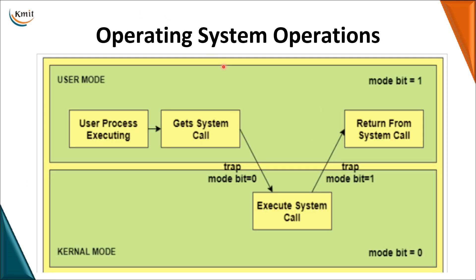We have covered the basic services provided to the user. Now we'll see what are the operating system operations. Basically, an operating system operates in two modes: user mode and kernel mode. The mode bit is present in your process status word register. If that bit is set to one, the operating system operates in user mode; if it is set to zero, it operates in kernel mode.